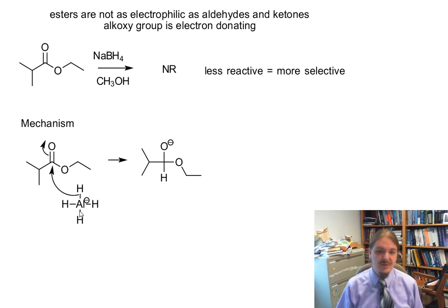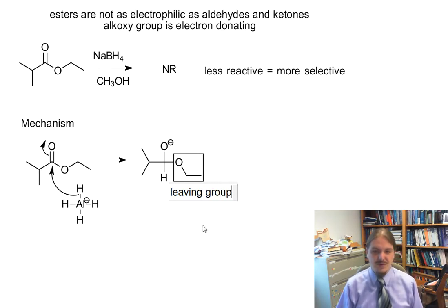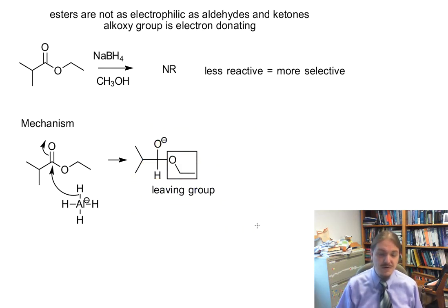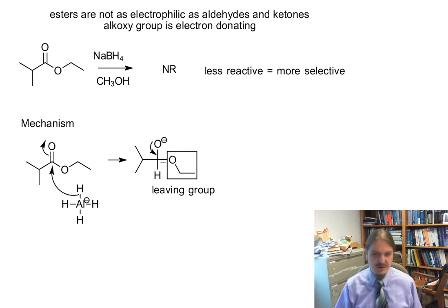This first step — the nucleophilic attack step — is the same. But there's a key difference for the ester compared to the aldehyde and ketone: there is an alkoxy group on this structure that can be a leaving group. Now, before you say the alkoxy group is a terrible leaving group — yes, it is a terrible leaving group. In SN2 reactions, this would never be a leaving group. But this is not an SN2 reaction. We have a different mechanism where nucleophilic attack happens first and loss of leaving group happens second. We have an SP2 hybridized substrate rather than SP3, and we are dealing with one of the most powerful nucleophile-producing agents around.